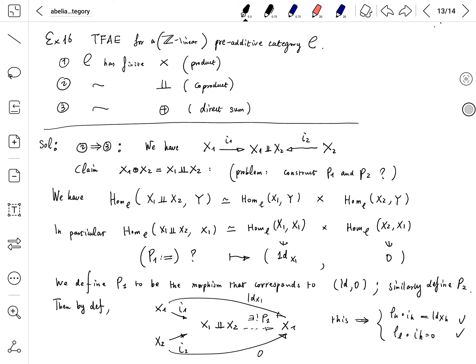Pre-additive category is sometimes called C-linear category. I will give a quick review.